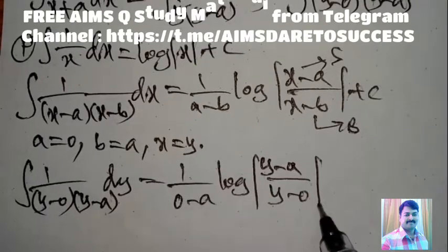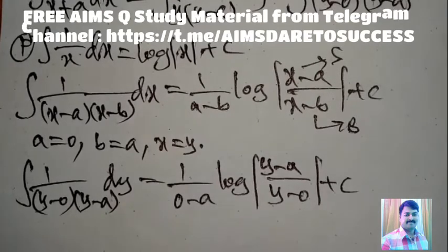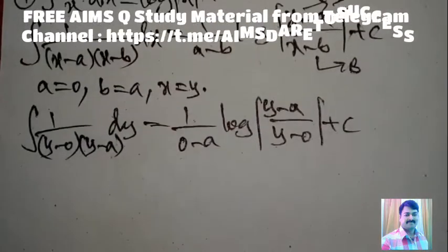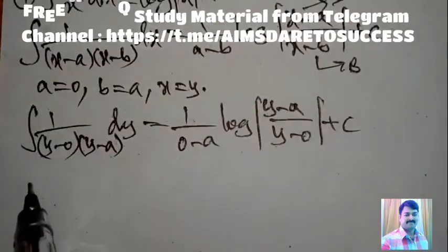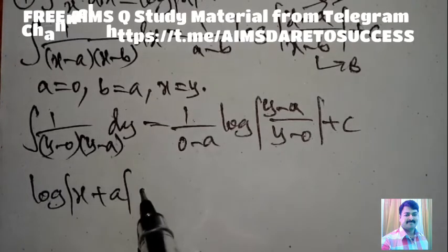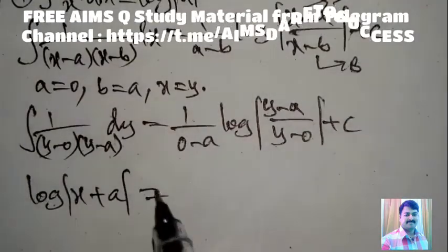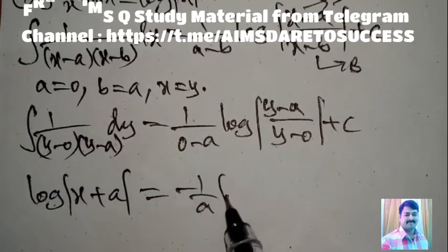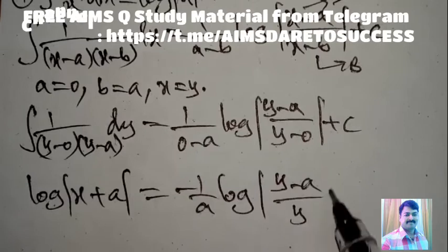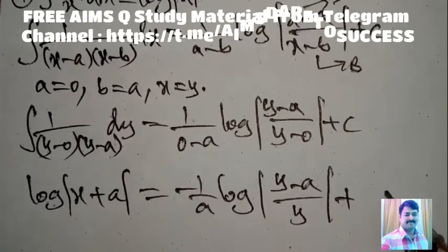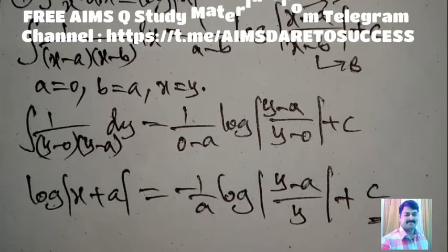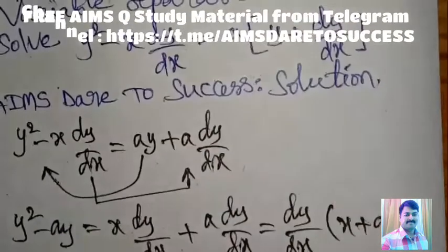The left-side integral of 1/(x + a) dx = log|x + a|. So the final answer is: log|x + a| = −(1/a) × log|(y − a)/y| + C. Very easy answer.